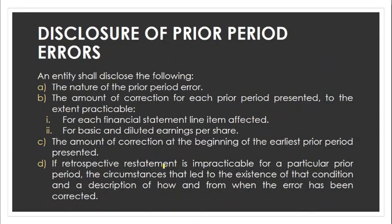Disclosures for prior period errors should include: the nature of the prior period error; the amount of correction for each financial statement line item affected and for basic and diluted earnings per share; the amount of correction at the beginning of the earliest prior period presented; and if retrospective restatement is impracticable for a particular prior period, the circumstances that led to that condition and a description of how and from when the error has been corrected.